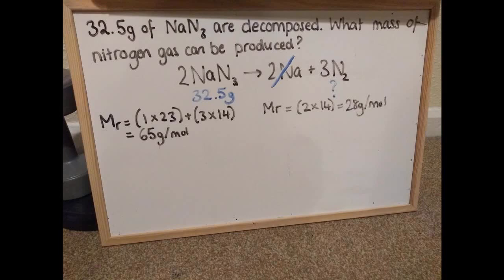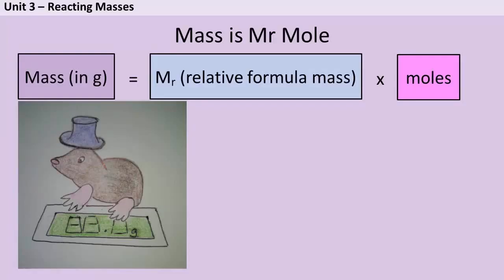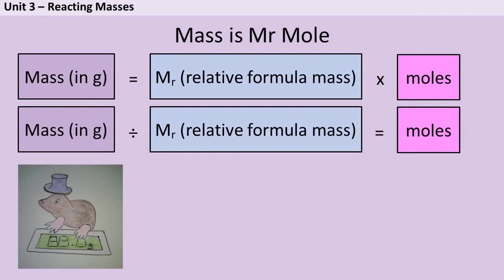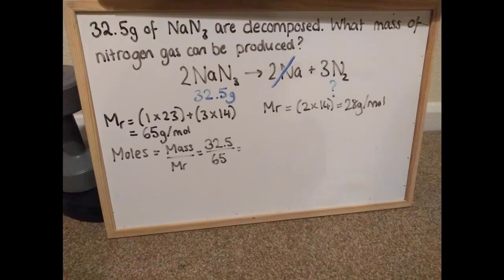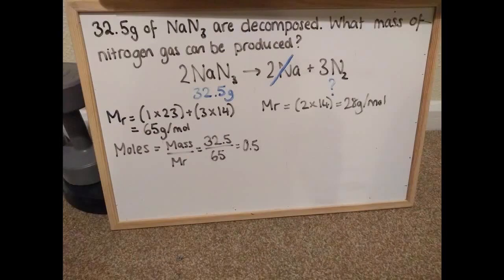So I know that one mole of sodium azide would weigh 65 grams and I know that I've got 32.5 grams. So now I need one of the only equations I need to remember in chemistry and that equation is mass is MR times mole. Or in other words the total mass is MR, that's the relative formula mass, times by the number of moles I've got. Now if I rearrange that by dividing both sides by MR what I'm left with is that the number of moles I've got is the mass, that's 32.5 grams, divided by the MR which is 65 grams. And if I do 32.5 divided by 65 I find out that I have half a mole of sodium azide.